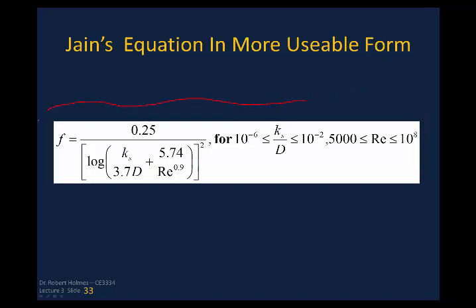If you don't like using the Moody diagram because the lines run together, you can use the Jain equation, which is an explicit representation of the Moody diagram. For the initial assumption of wholly turbulent flow, assume Reynolds number is very large — much greater than 1 — making the Re-dependent term equal to zero. Then just plug in the relative roughness (epsilon/D), take the log base 10, square it, and divide 0.25 by that to get an initial F. Use that to calculate head loss and then the initial velocity and flow rate.